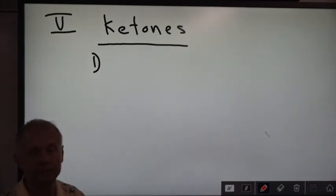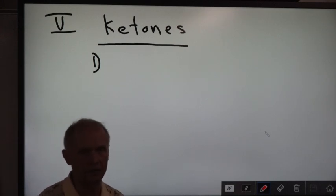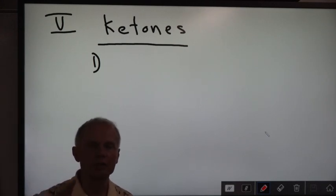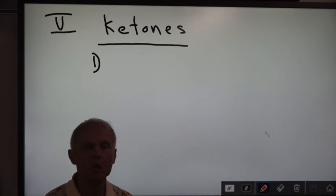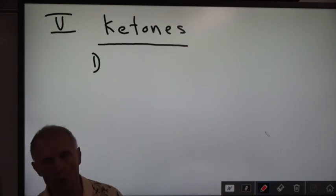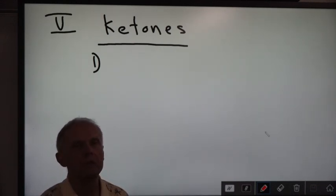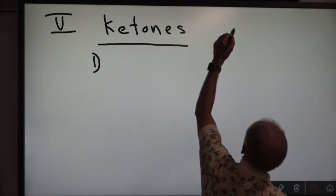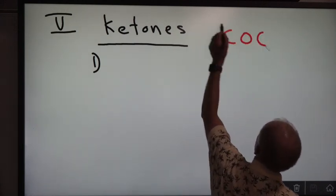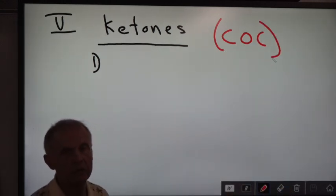Now we are going to go to something called ketones, Roman numeral five. The call letters for a ketone are COC — C-O-C. For alcohol it's OH, for acid it's COOH, for aldehyde it's CHO, and for ketone it's COC.